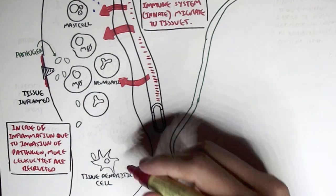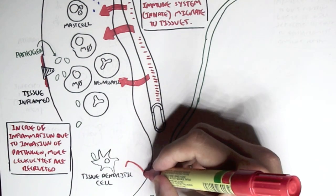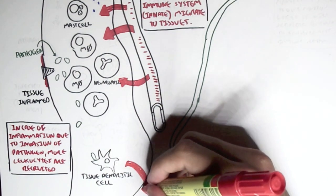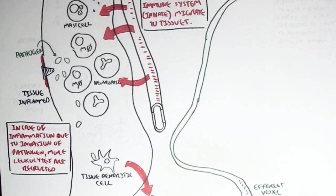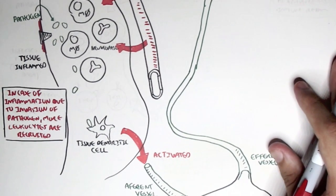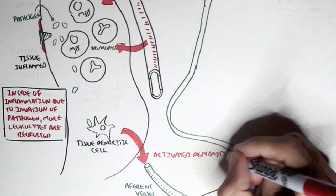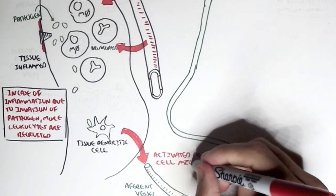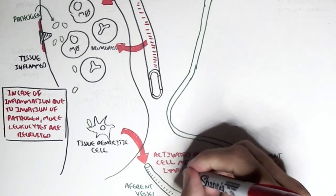But how does this happen? Well, the dendritic cells play a critical role in that it will become activated once it phagocytizes the antigen of the pathogen. And then it brings the antigen of the pathogen, travels to the lymph nodes with the antigen of the pathogen, and presents it to the T and B cells.